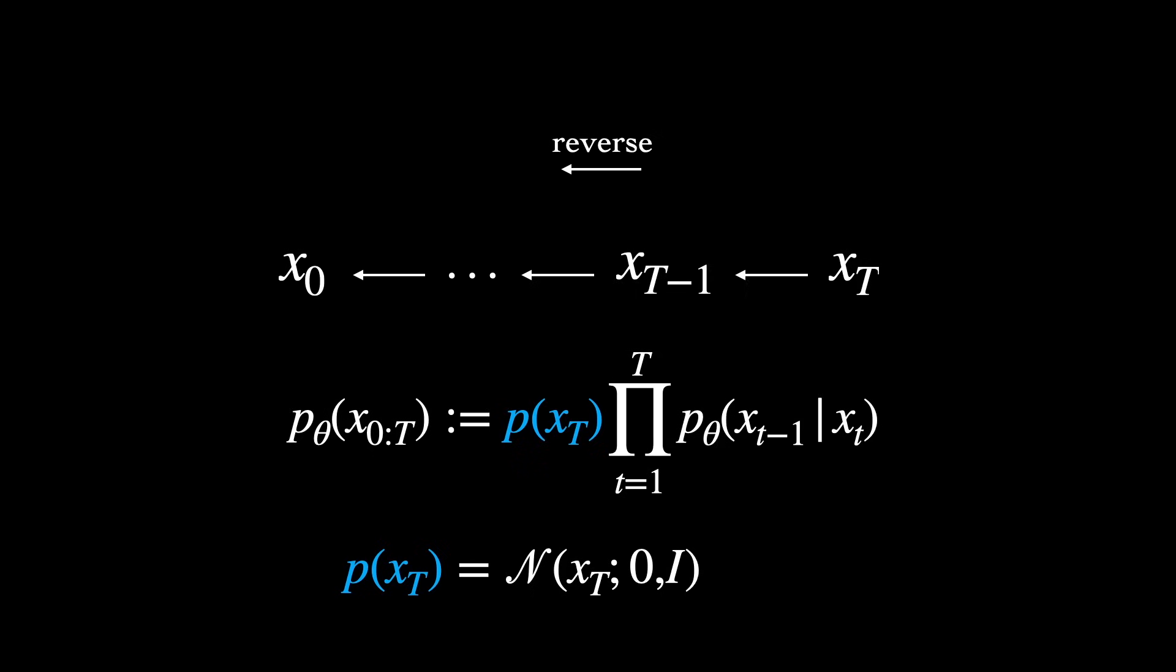So at inference time, in order to actually generate a sample, we start from a Gaussian and begin sampling from the learned individual steps of the reverse process, p of xt-1, given xt, t, until producing an x0.